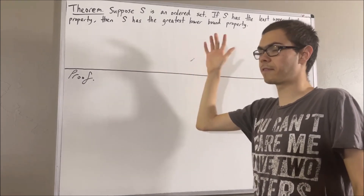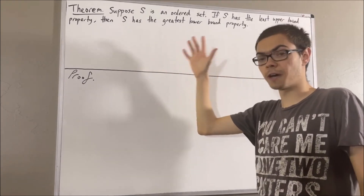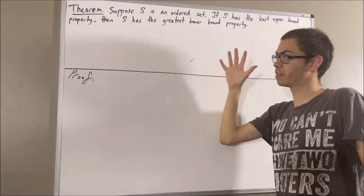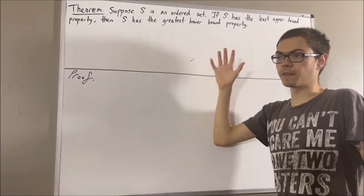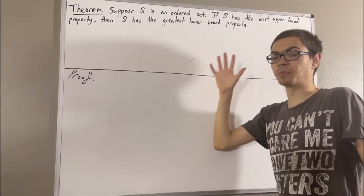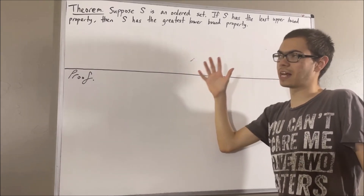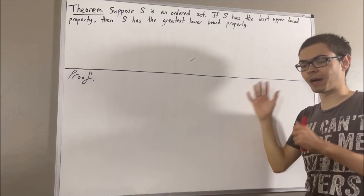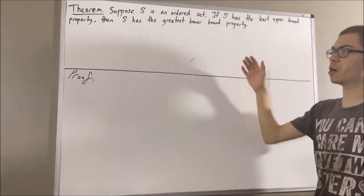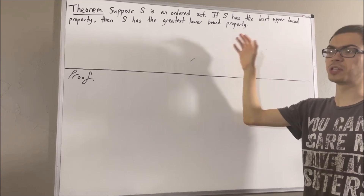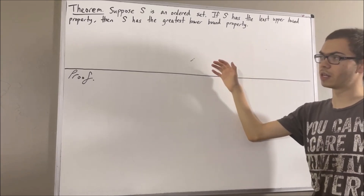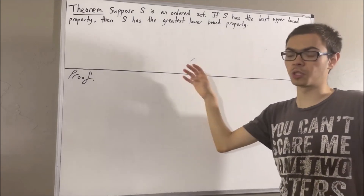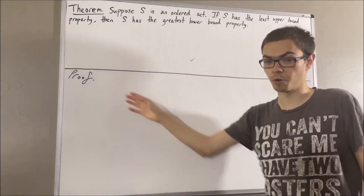Now, to say that a subset of S is bounded above means that the subset has an upper bound. To say that a subset of S is bounded below means that the subset has a lower bound. I would like to explicitly remind ourselves the definitions of upper bound, lower bound, supremum, and infimum, because it's going to be important to observe how we use those four definitions in our proof.